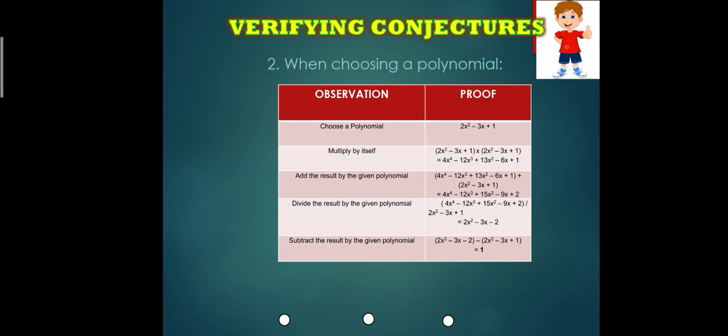After that, you are going to divide the given polynomial to the answer. So your result will be 2X squared minus 3X plus 1. After that, you will subtract that by the given. So the given is again 2X squared minus 3X plus 1. Your final answer will be 1.